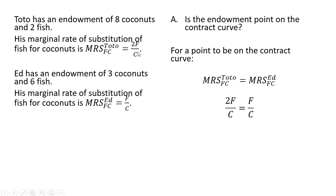Plugging in our formulas for the marginal rates of substitution for each consumer, we're going to evaluate these at the initial endowments. So for Toto, F will be two and coconuts will be eight. And for Ed, F will equal six and coconuts will equal three.